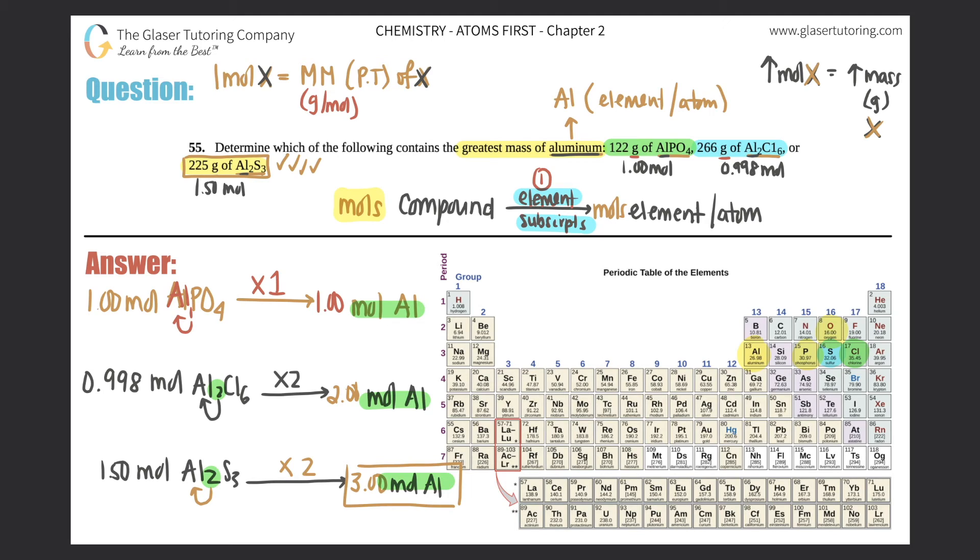Now if you wanted to take it a step further and just go from moles of aluminum for each one of these to grams of aluminum, you could totally do that and then compare those numbers. But you will get the same answer because whether you do 1 times the molar mass of aluminum, 2 times the mass of aluminum, 3 times the molar mass of aluminum, 3 times will be the largest number. So your answer is the 225 grams of Al2S3.